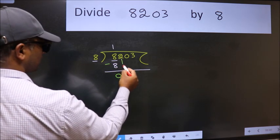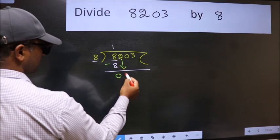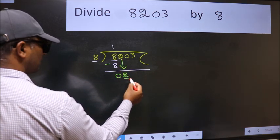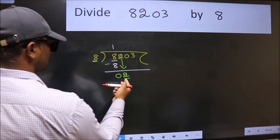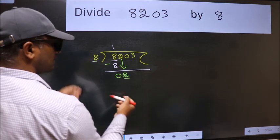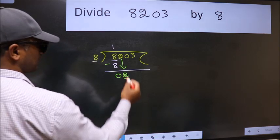After this, bring down the beside number. So 2 down. Now here we have 2 and here 8. 2 is smaller than 8, so we should bring down the second number.